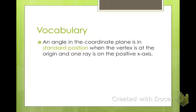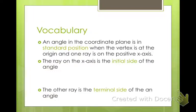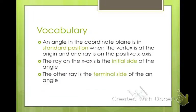Here's some vocabulary. An angle in the coordinate plane is in standard position when the vertex is at the origin and one ray is on the positive x-axis. You have your vertex, the point where your two rays connect, at the origin. One ray points straight to the right, and the other one is somewhere in your plane. The ray on the x-axis is called the initial side of the angle.